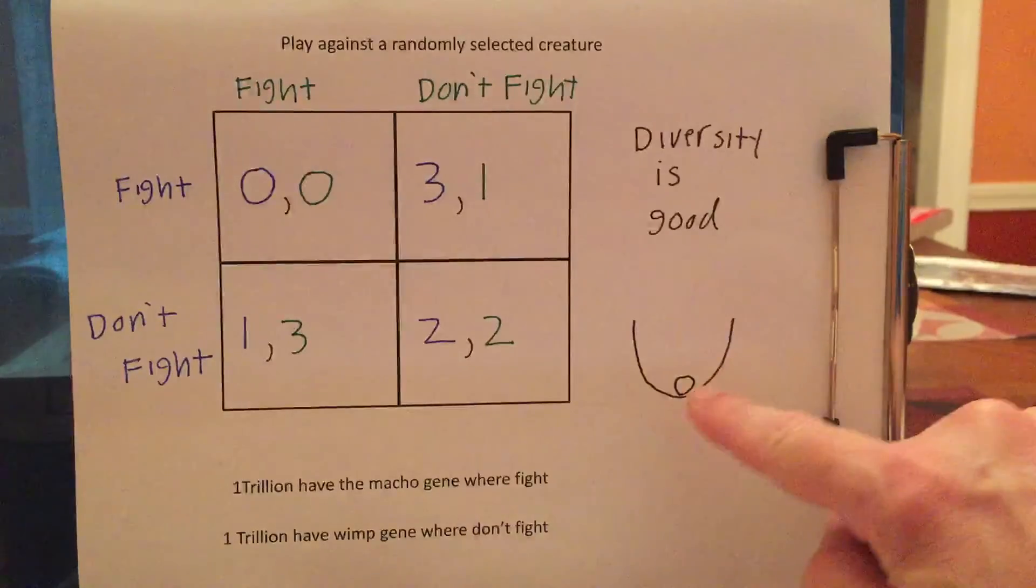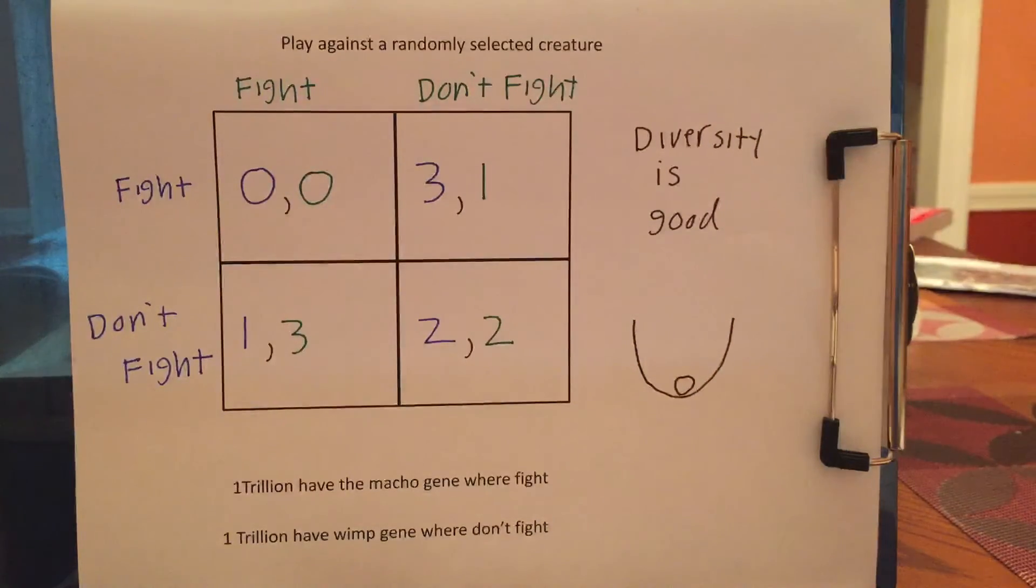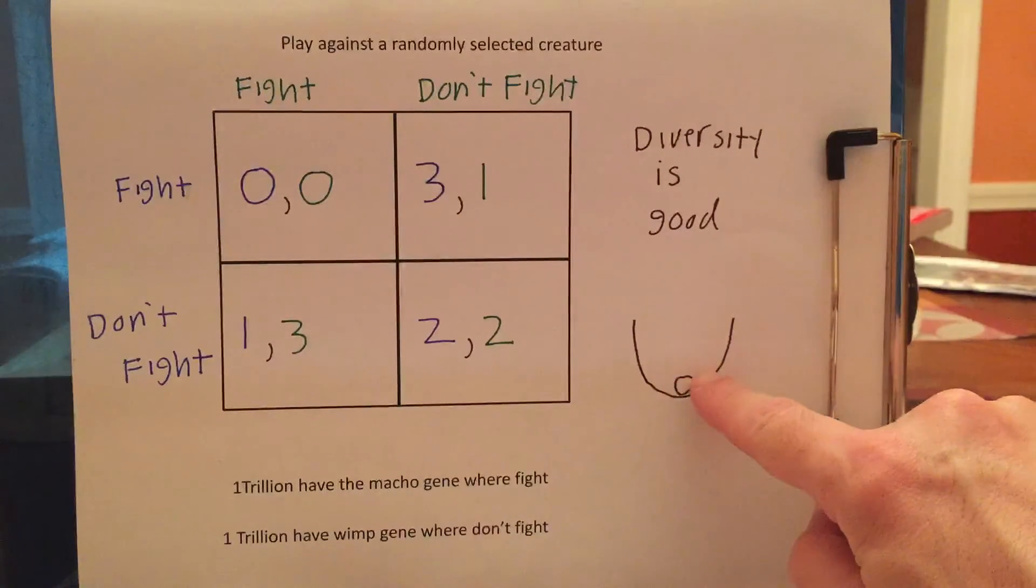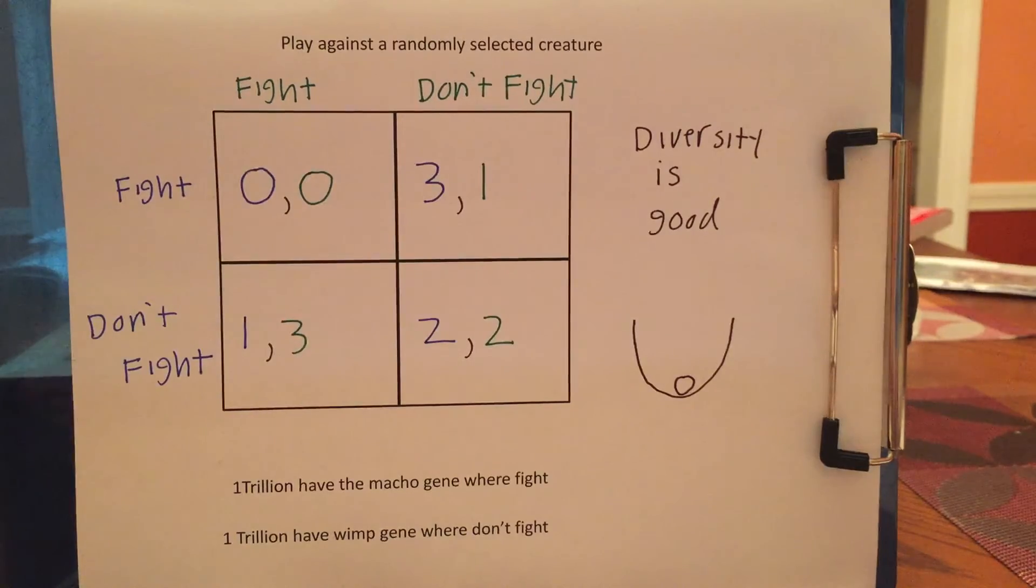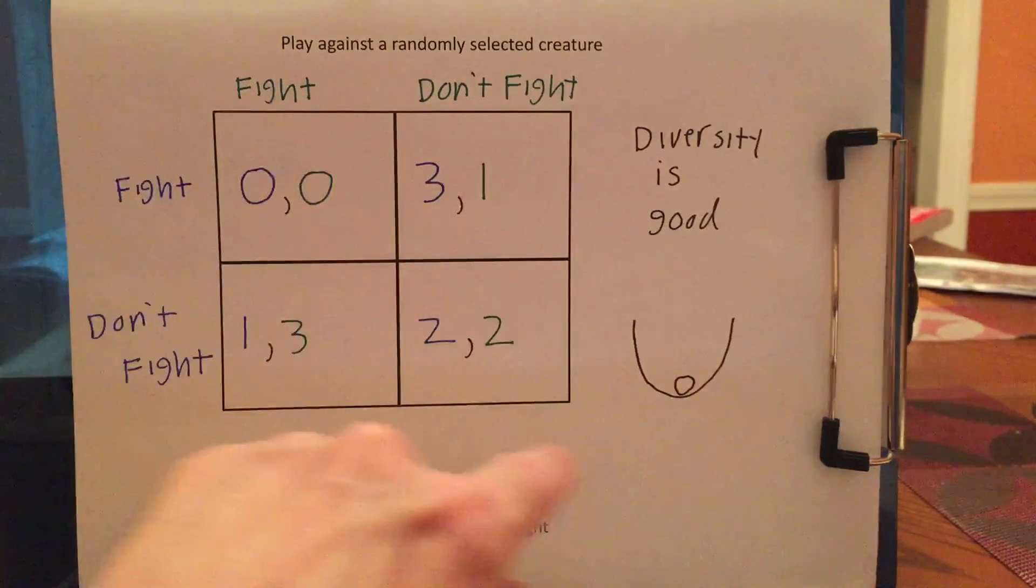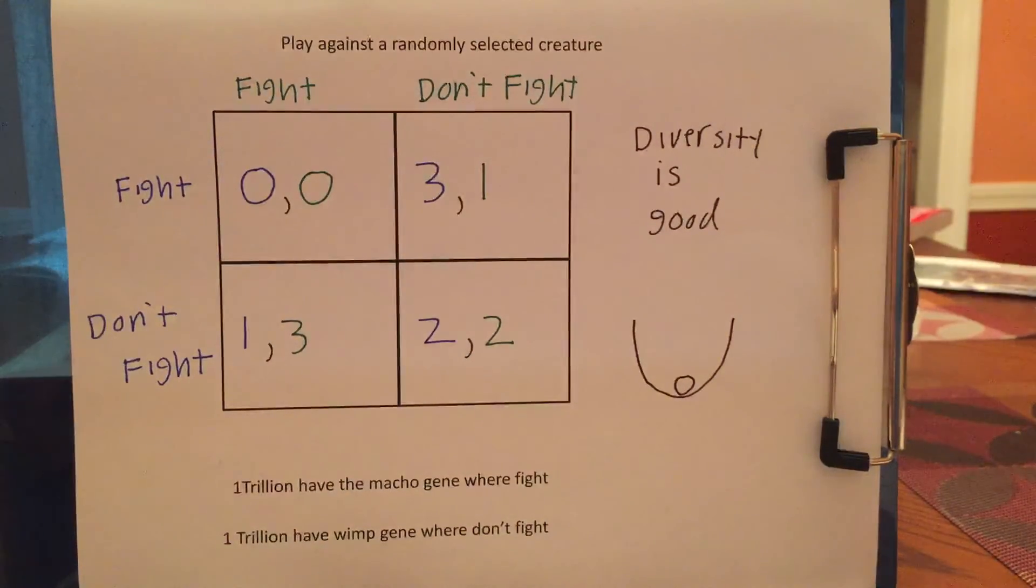So at exactly one half, one half, being a macho or a wimp on average will give you the same payoff. But what happens if through mutations, a few more machos are born? Well, because diversity is good, if a few more machos are born because of mutations, now the advantage to being a wimp will exceed the advantage to being a macho. So a few more machos are born. Oh, but now there's an advantage to being a wimp. That'll roll the ball back. And if more wimps are born, now there's an advantage to being macho. So the payoffs here, because diversity is good, they're going to push you back. If there's one generation where there's more machos than wimps, the generation after that, the wimps will have an advantage.